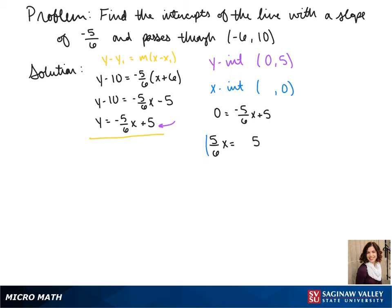We multiply both sides by 6 over 5. This gives us x equals 6. So our x-intercept is 6.